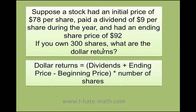We need to use this formula: dividends plus the ending price minus the beginning price, and then you multiply all that by the number of shares — that's going to give you the dollar return.